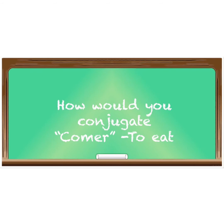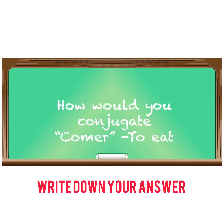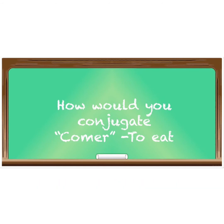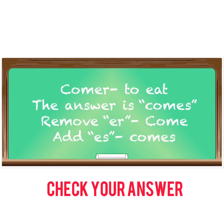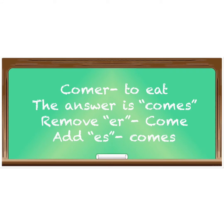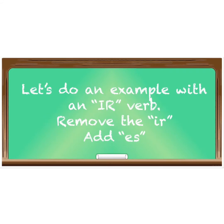Try one for yourself: the -er ending verb 'comer' means 'to eat.' How would you conjugate 'comer' to say 'you eat'? The correct answer is 'comes.' All we did was remove the -er, leaving 'com,' then we added -es to get 'comes.' So the answer is 'tú comes.'